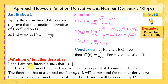We say that given two intervals I and J where I is a subset of J, and function f defined on I admits at every point of J a number derivative, the function that at each real number x₀ belonging to J corresponds the number derivative f'(x₀) is called the function derivative of f on J, and it is denoted by f'.